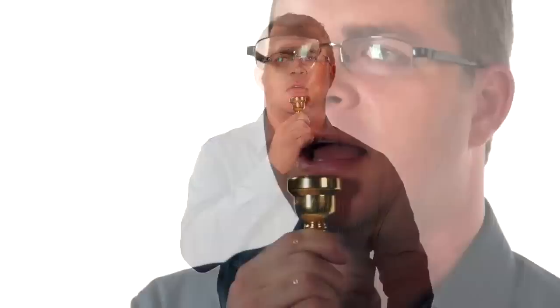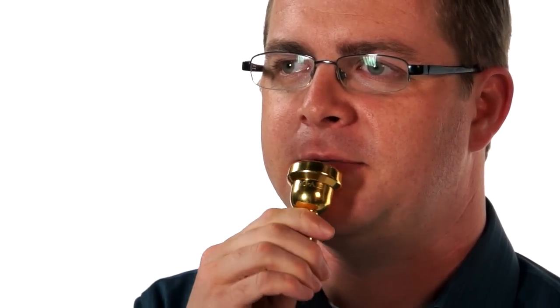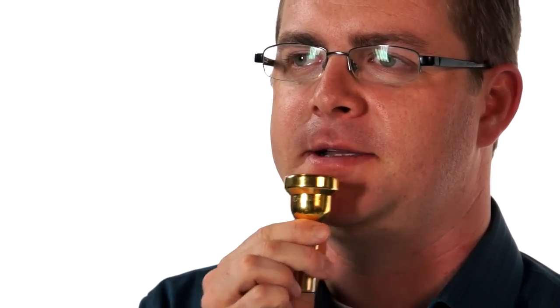Now take the mouthpiece while you have your M face set with the corners firm and place the rim of the mouthpiece right above your chin like this. Then you're going to rotate the mouthpiece up onto the lips here. You can pull it away, put it back, roll it down, keeping your M face set with the corners very firm.